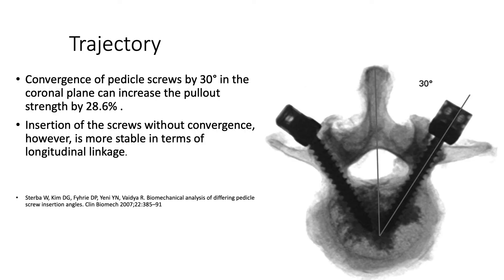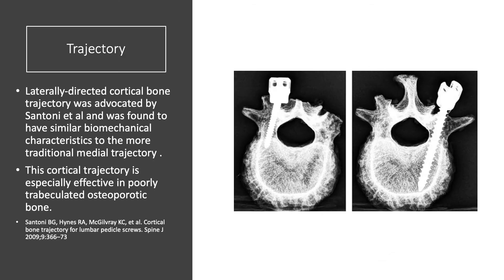Now let's see which trajectory provides better biomechanical stability. Convergence of a pedicle screw by 30 degrees in the coronal plane can increase pull-out strength by 28%. However, insertion without convergence is more stable in terms of longitudinal linkage, though better screw designs with various degrees of freedom can bypass some of these shortcomings. A laterally directed cortical bone trajectory was found to have similar biomechanical characteristics to the more traditional medial trajectory.